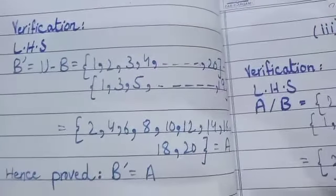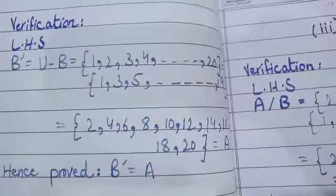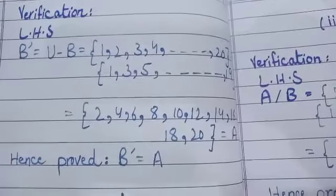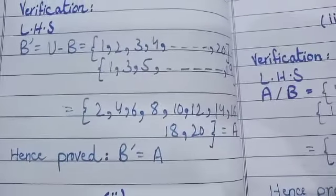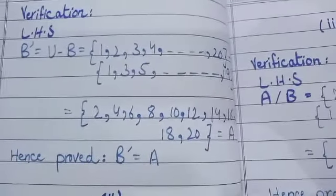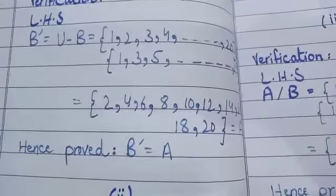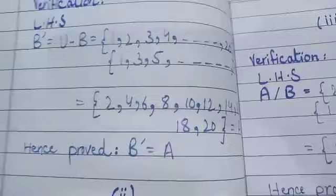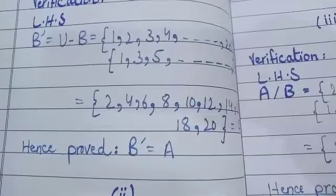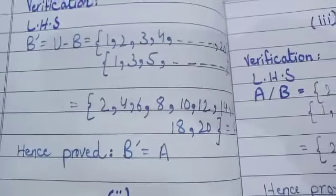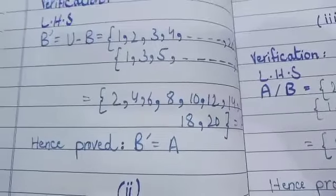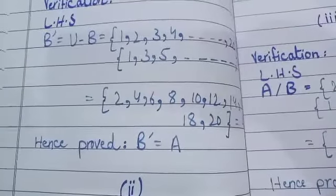B is a set of even numbers. Hence by finding the difference, we can find that the complement set is {2, 4, 6, 8, 10, 12, 14, 16, 18, 20}, that is also equal to the set A as given in the question. Hence it is proved that the complement set of B is equal to the set A.